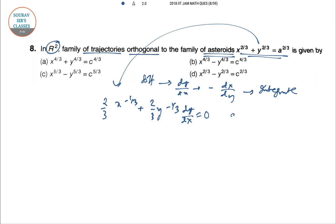So, orthogonal trajectory, if we have replaced dy/dx is minus dx/dy. So, minus x^(2/3) y to the power minus 1/3 dy equal to 0.